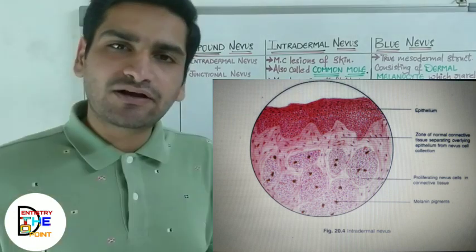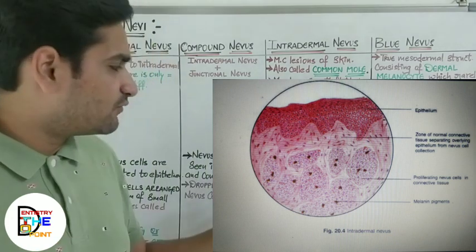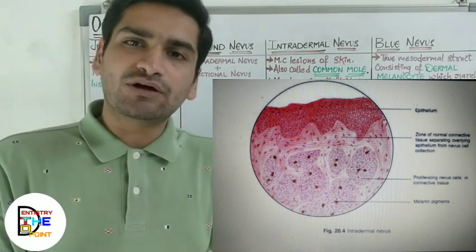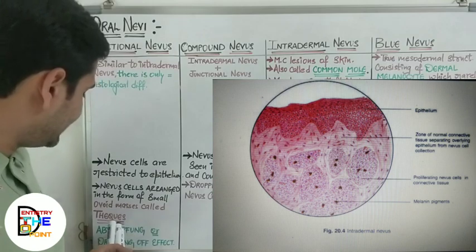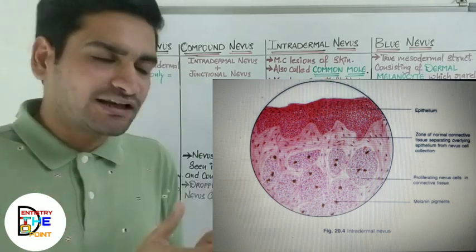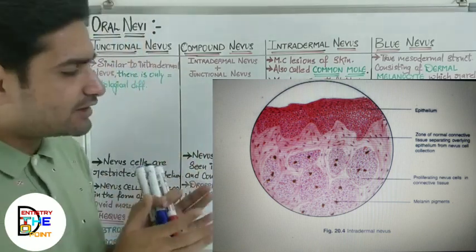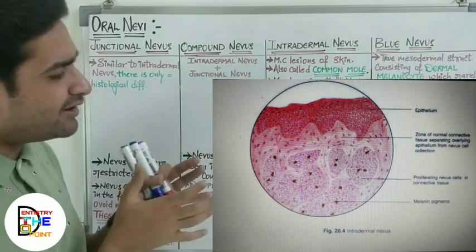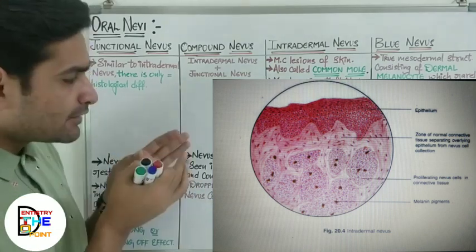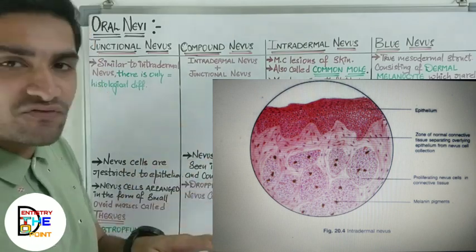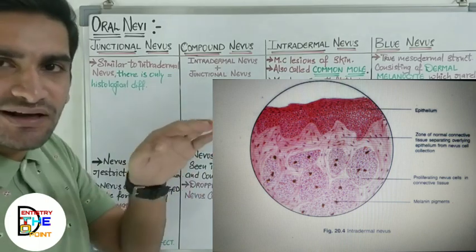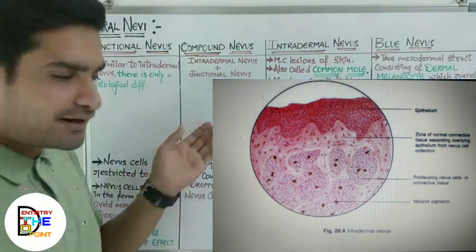Discussing the histological section of intradermal nevus: the nevus cells have already crossed the epithelium into the connective tissue. The nevus cells proliferate into an ovoid mass called theeks — they are called theeks of nevus cells. These theeks of nevus cells are present in the connective tissue. Importantly, there is a zone of normal connective tissue present between the normal epithelium and the affected connective tissue, separating both zones.